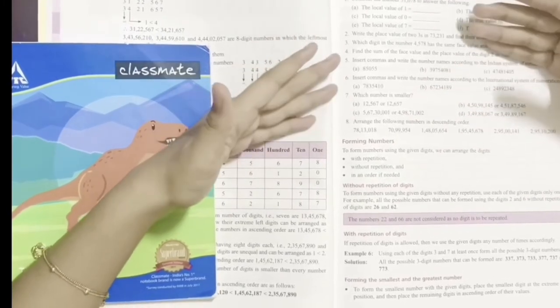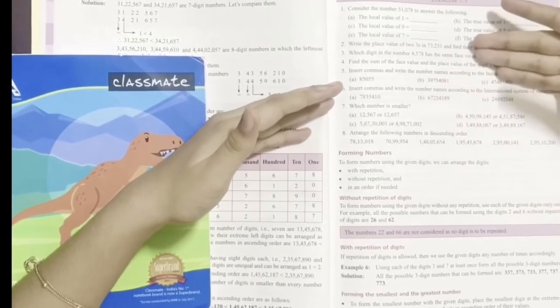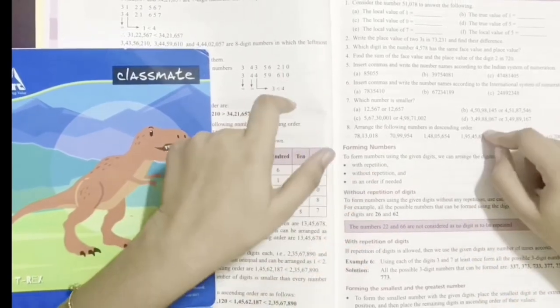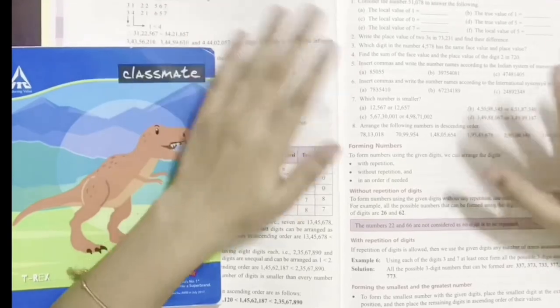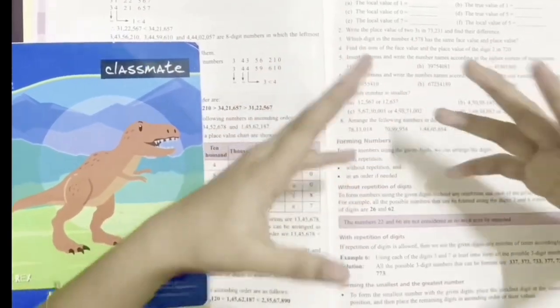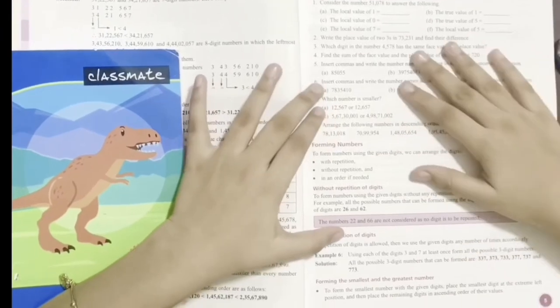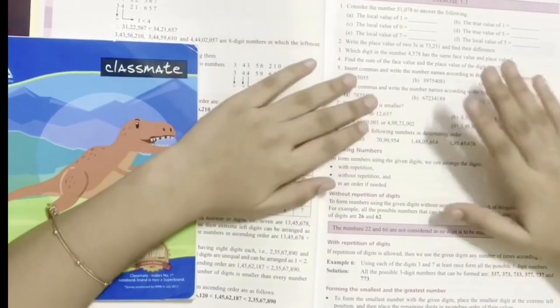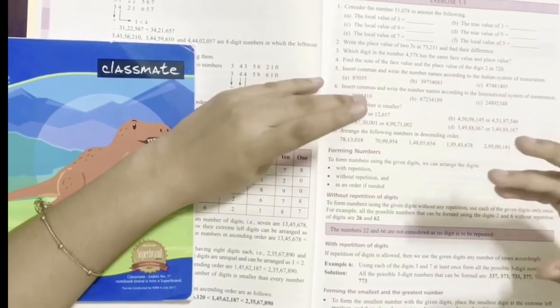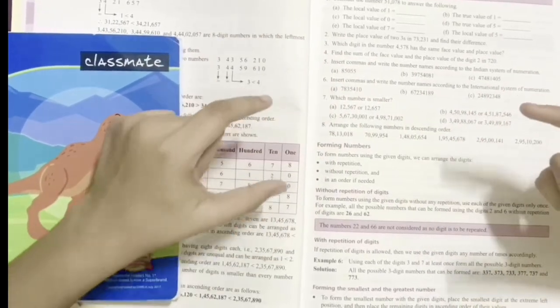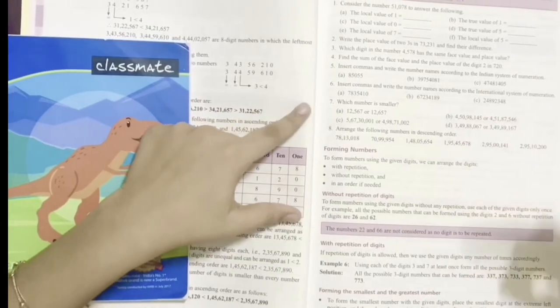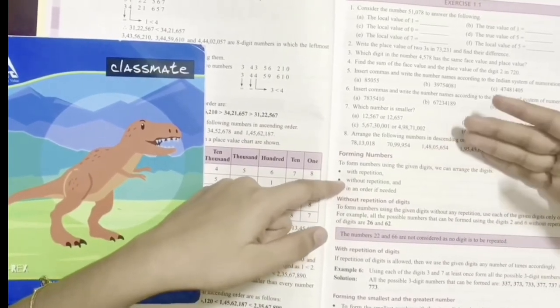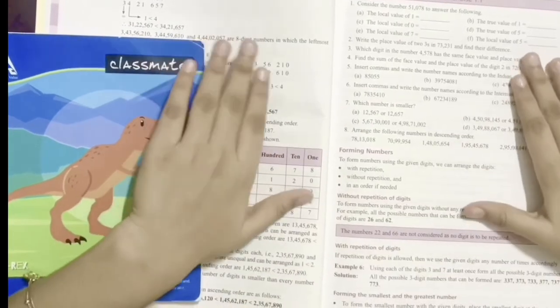How do we form numbers? If someone gives you some digits like 1, 2, 3, how will you form a number with that? Will it be 321 or 213? Our first point is with repetition - you can make a number using the digits by repeating the digit. The next one is without repetition - you should not repeat the digits when forming a number.